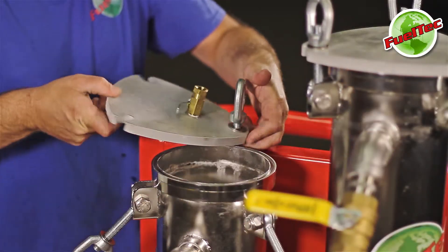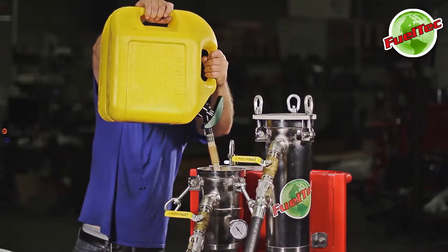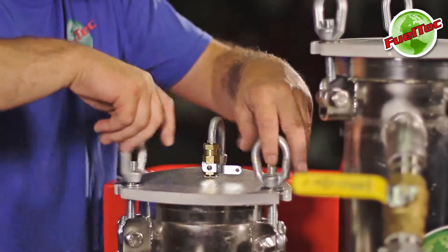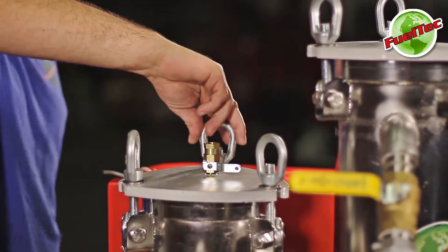Open the primary filter housing cover. Prime with 2 gallons of clean diesel fuel. Replace the cover with the swing bolts hand tight.